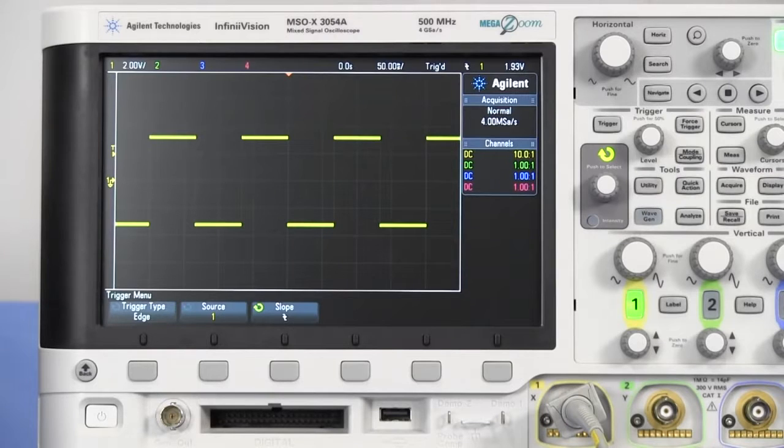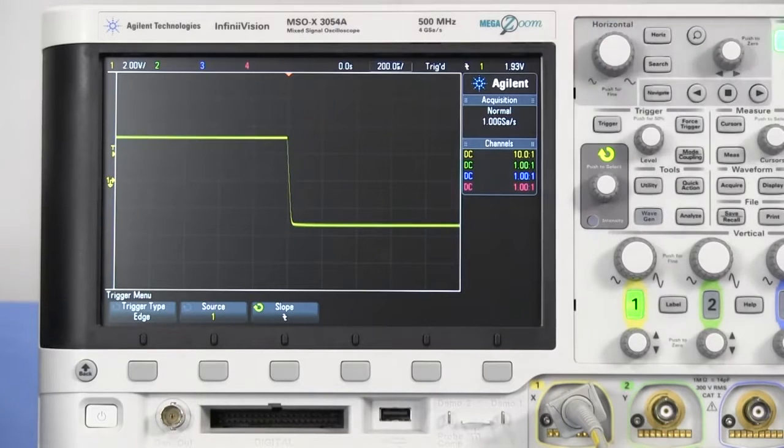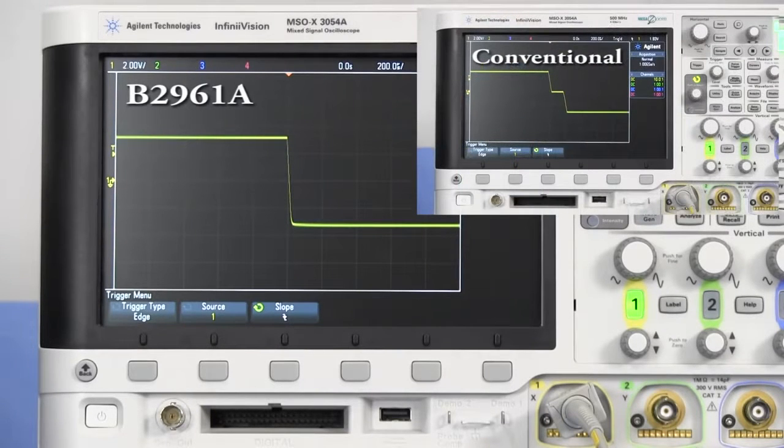Look at the result. Square wave is captured by the oscilloscope. Even if I change the time scale of the oscilloscope, you can see that it still remains a clean waveform.